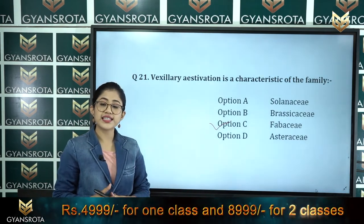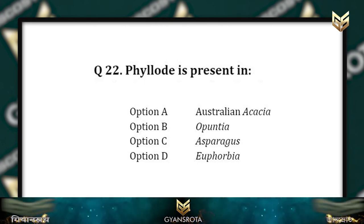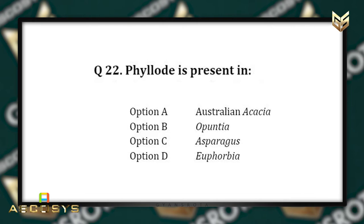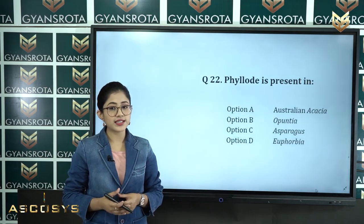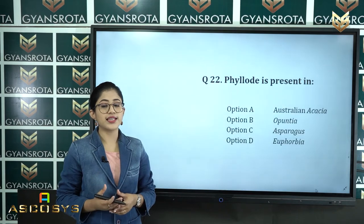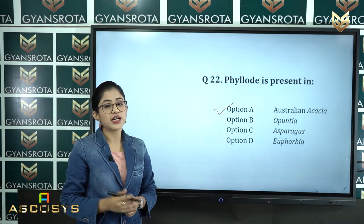Question number 22: Phyllode is present in — option A Australian acacia, option B Opuntia, option C Asparagus, option D Euphorbia. This is a very easy question. Phyllode is present in Australian acacia, so option A is the correct answer.